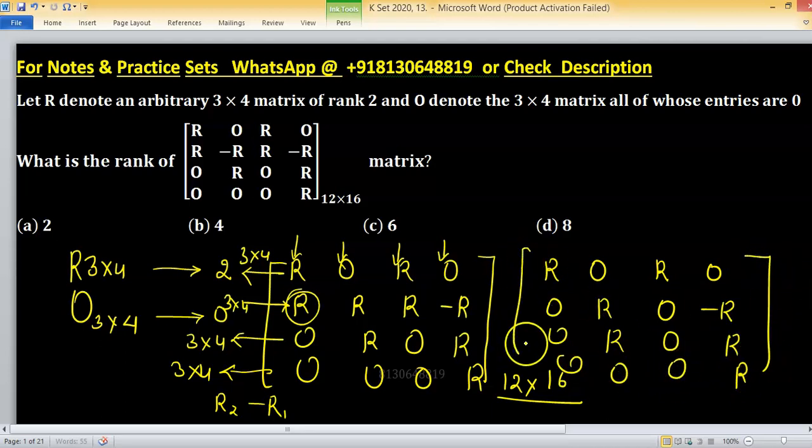Now you can observe the second row and third row. These two rows are in proportion, so you can delete one row.